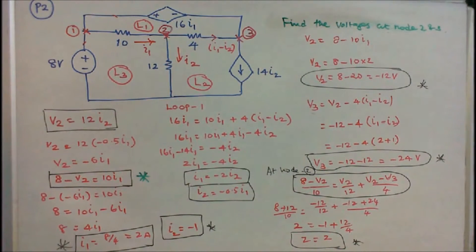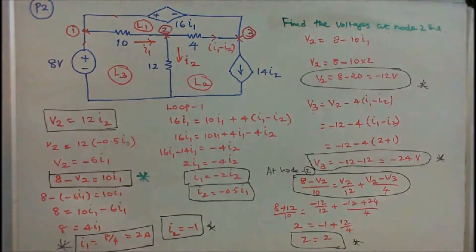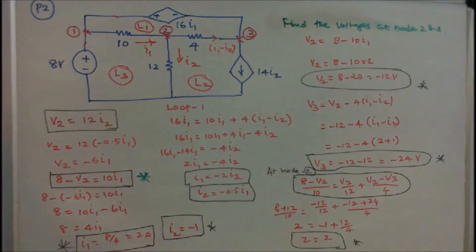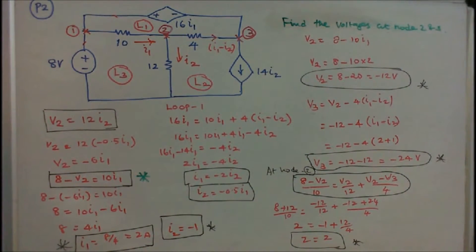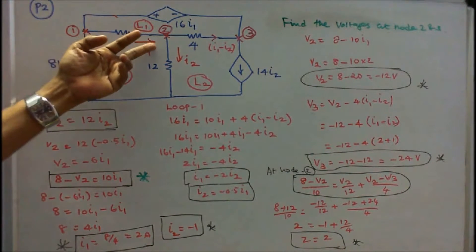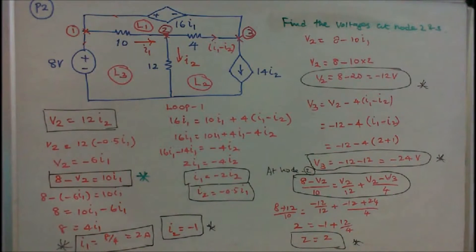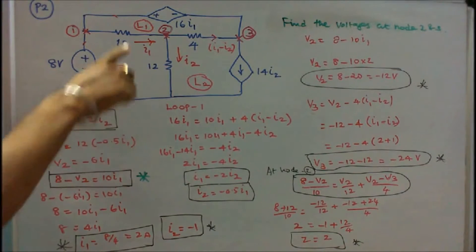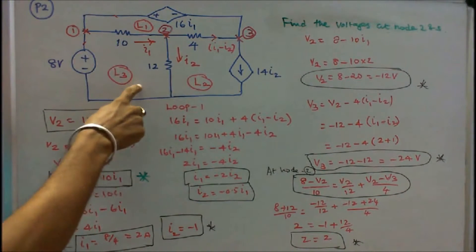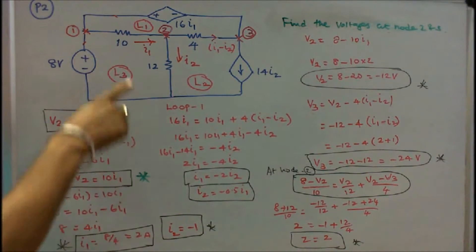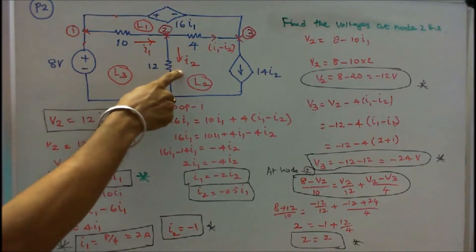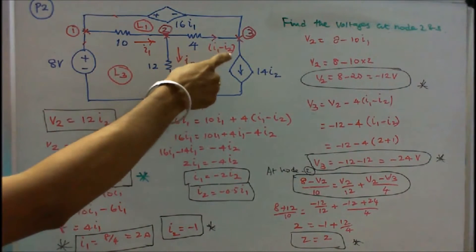Problem number 2: 3 resistors, 1 independent voltage source, and 2 dependent current sources are connected as shown in figure. The question is find the voltage at node 2 and node 3. There are 3 loops — this is loop 1, this is loop 2, this is loop 3. Here this current direction is I1, this is I2. Therefore current flow in the 4 ohm resistor is I1 minus I2.